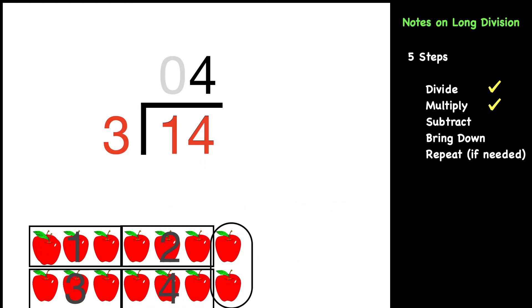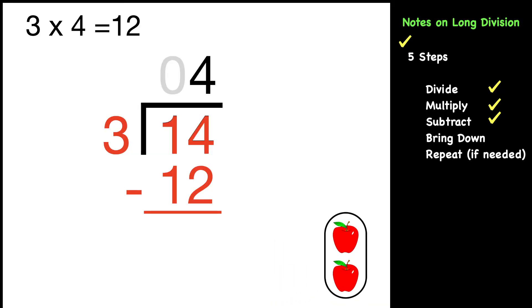Our next step is multiply. We multiply the divisor times the quotient. So 3 times 4 is 12. That 12 we put underneath the 14. Now we're ready to subtract. It's going to be 14 minus 12, which equals 2.